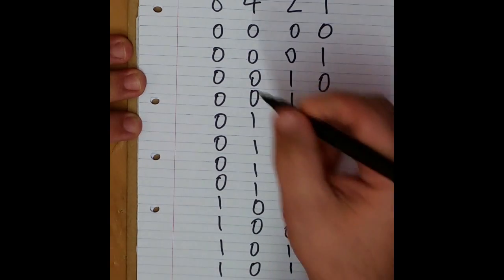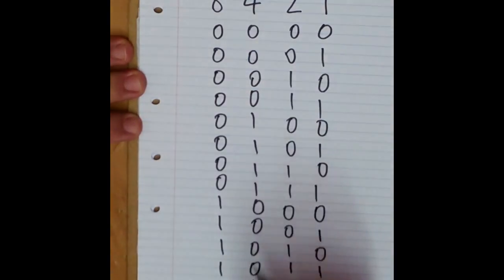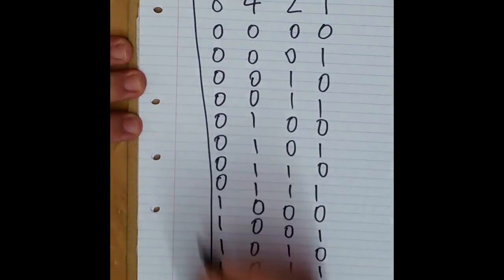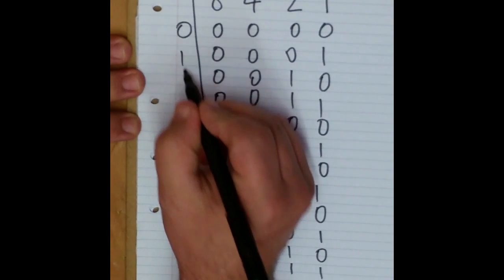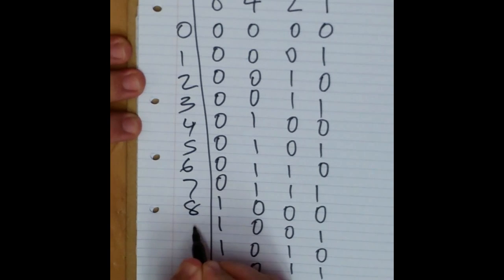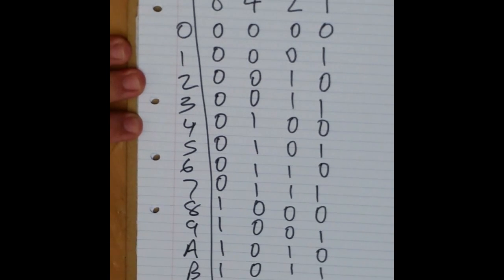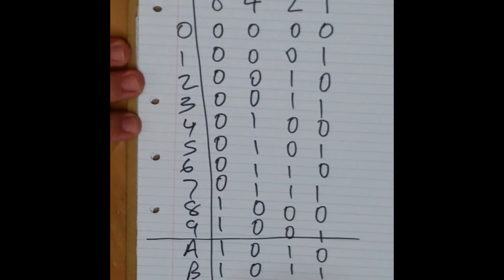Now let's write our decimal numbers next to this. Starting with zero: 0, 1, 2, 3, 4, 5, 6, 7, 8, 9. Run out of numbers, go to letters A, B, C, D, E, F. So that's binary-coded decimal — just remember up to the nine.